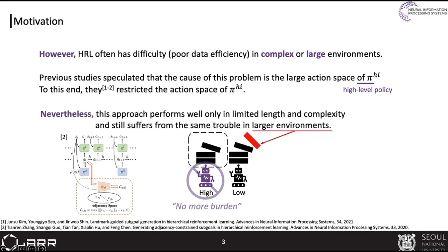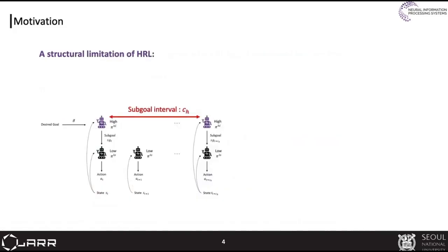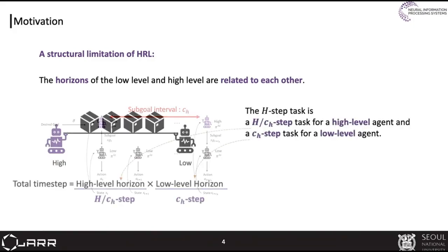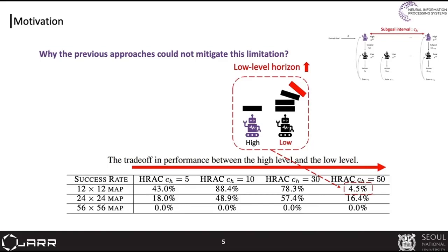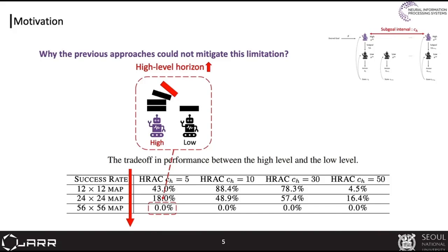Nevertheless, this approach performs well only in limited complexity and still suffers from the same trouble in large environments. Looking at the structural limitation of HRL: in previous HRL frameworks, the horizons of both levels are related to each other structurally because they share the total length of the episode. This relation causes a trade-off between the burden of both levels. If the intervals between higher-level actions increase, the lower level has to cover a wider range, and in the opposite case, the higher level takes charge of the extended burden alone in large environments.